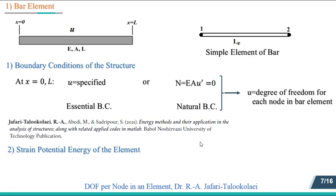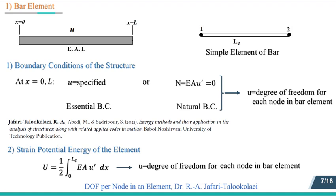For the second method, the strain potential energy of a bar, denoted U, can be written as one half times the integral of EA multiplied by u prime squared. Based on the rules for this method, up to one order less than the derivatives of variables in the integrand must be the degrees of freedom for each node. The first derivative of u appears in the integrand, so the zeroth order derivative — meaning the variable u itself — must be the degree of freedom for each node. Both methods confirm that u is the only degree of freedom for the node in the bar element.